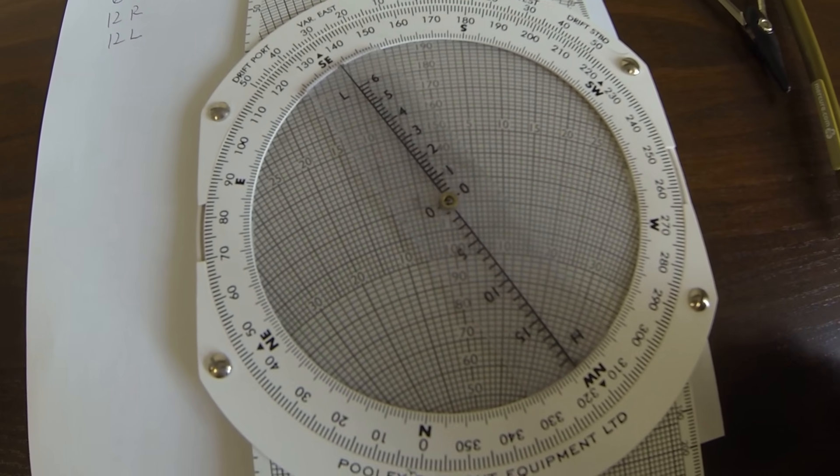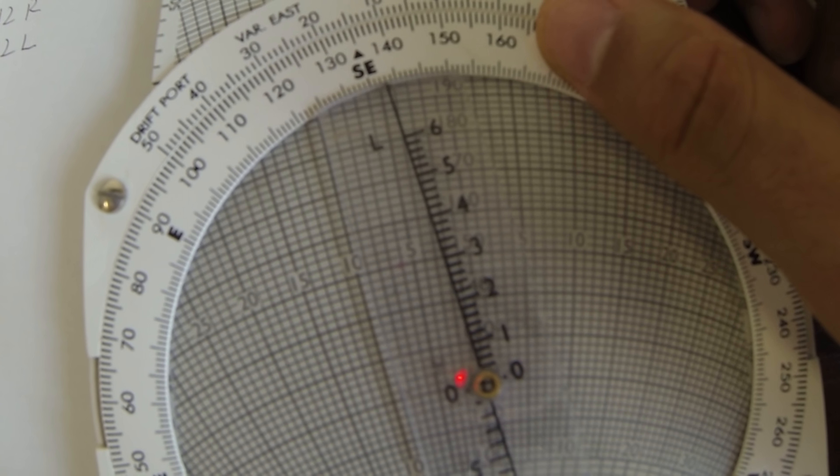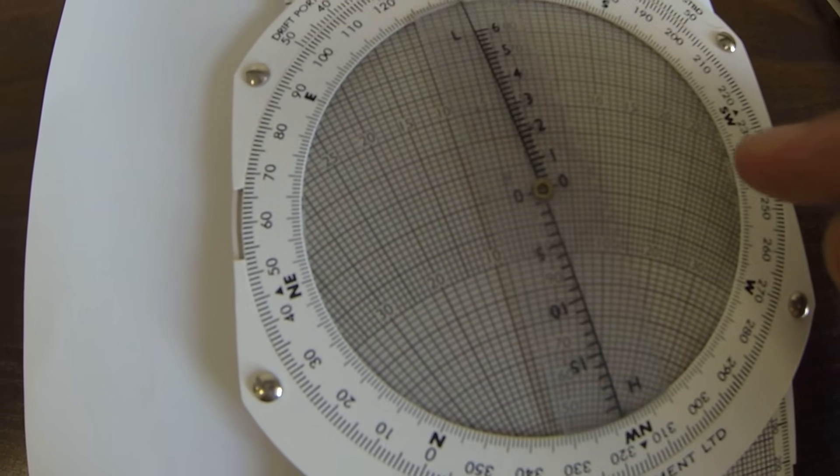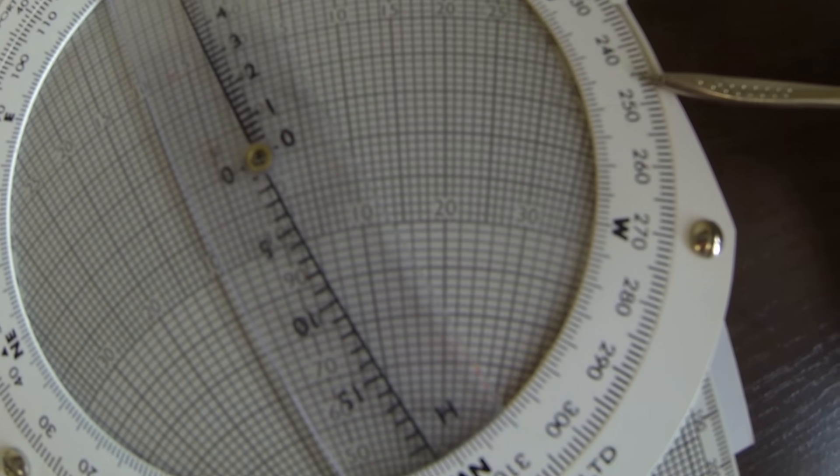The actual heading is 150, so we have to put here heading 150, align it with the true heading. And then the wind is 245.